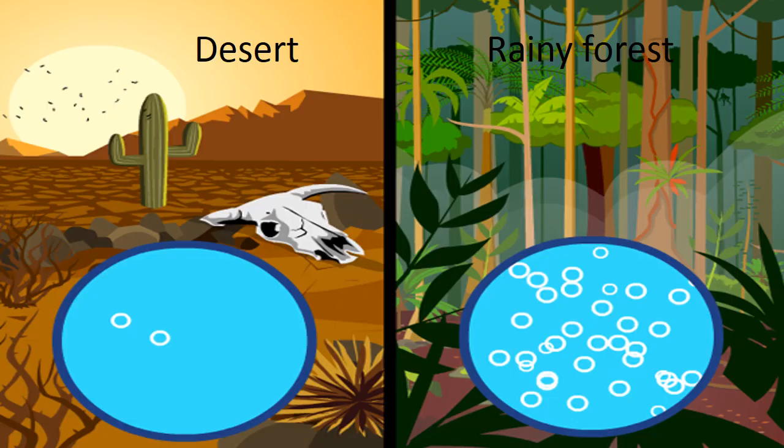Do you agree with me that deserts have less humidity than rainy forests? Definitely, deserts have less humidity because of hot sun. There are less water vapors present in the atmosphere of desert than as compared to rainy forests.